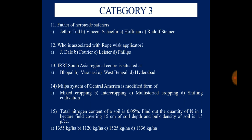Question 14: The Milpa system of Central America, or Sweden, is a modified form of — mixed cropping, intercropping, multi-storied cropping, or shifting cultivation. Question 15: If the total nitrogen content of a soil is 0.05%, find the quantity of nitrogen in one hectare field covering 15 cm soil depth with a bulk density of 1.5 g/cm³. Options are 1355 kg/ha, 1120 kg/ha, 1525 kg/ha, and 1336 kg/ha.